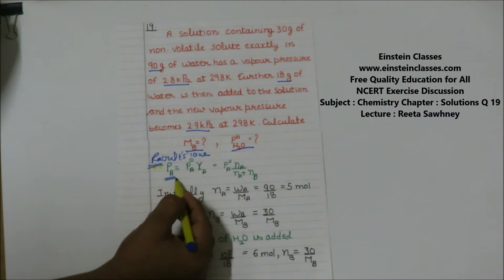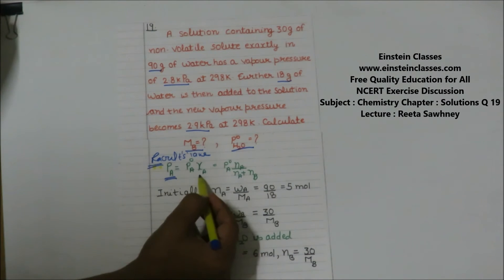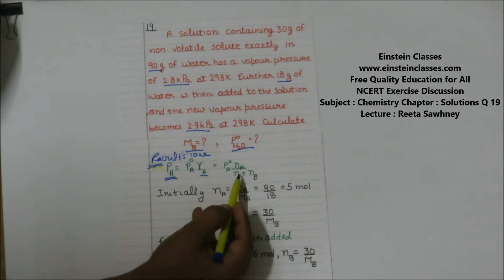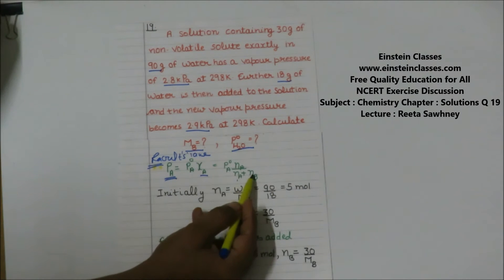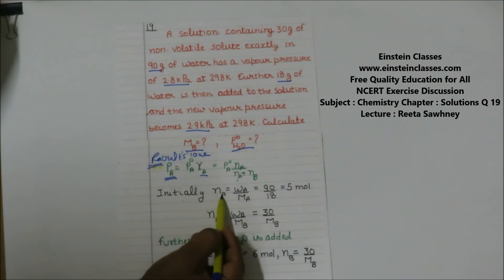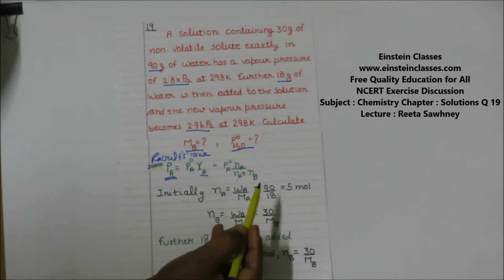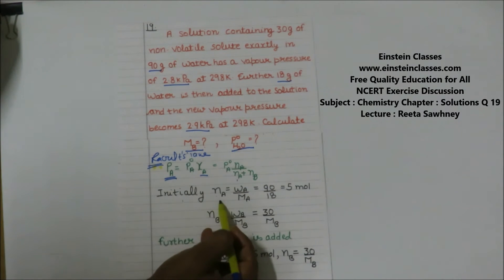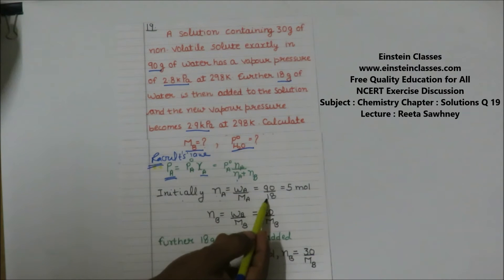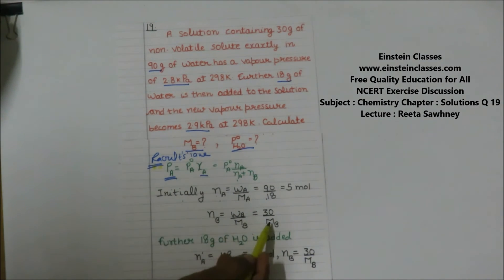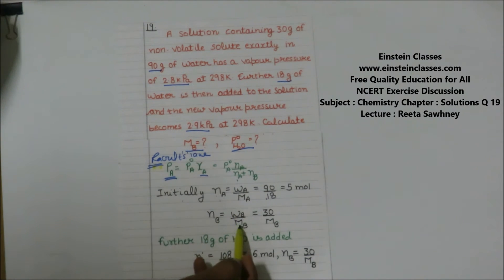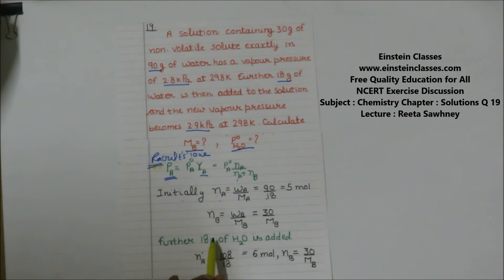So PA = P⁰A × XA, where the partial pressure is the total pressure of the solution. The mole fraction of solvent XA equals moles of solvent divided by total moles (moles of solvent plus moles of solute). Initially, with 90 grams of solvent, moles of solvent = 90/18 = 5 moles. Since our aim is to find the molar mass Mb of the solute, moles of solute NB = 30/Mb.